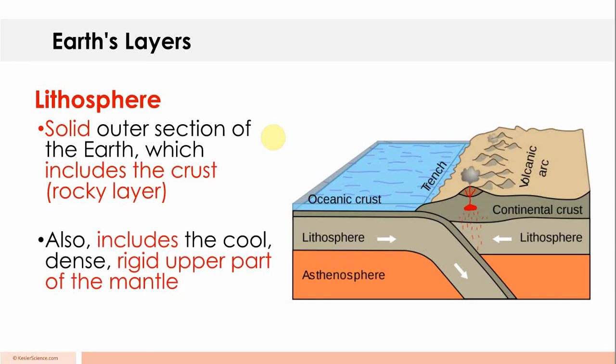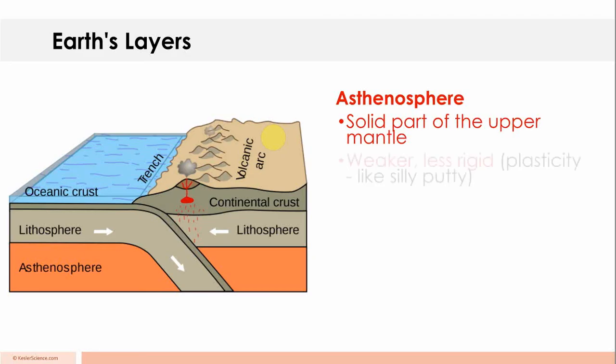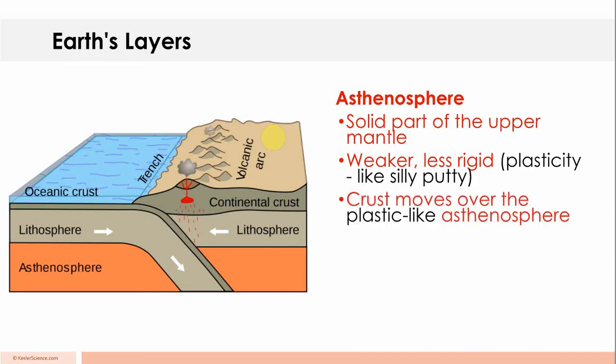So I saw written somewhere in our labs that the lithosphere and the asthenosphere are various kinematic layers. They are defined by their movement or lack of movement. The asthenosphere is the solid part of the upper mantle, weaker, less rigid plasticity, like silly putty. So that's really its defining characteristic.